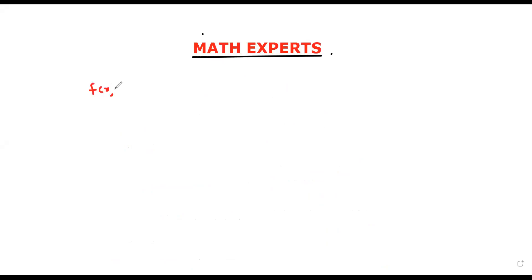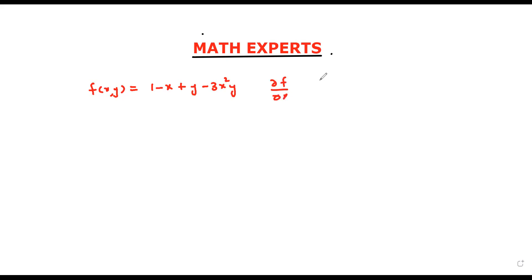We are given that f(x, y) = 1 − x + y − 3x²y. We need to find ∂f/∂x and ∂f/∂y at the point (1, 2), and we are specified to use the limit definition of the partial derivative.